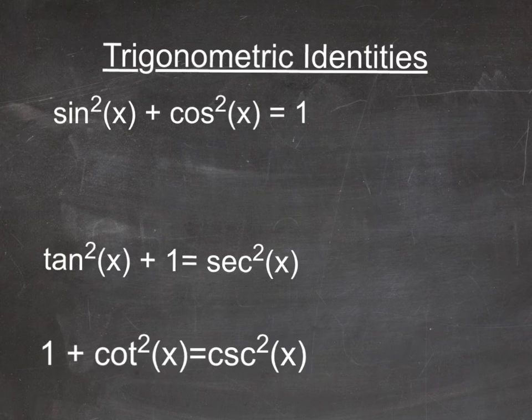So the first one, of course, is the equation of a unit circle, which is sin²(x) + cos²(x) = 1. So that's a good one to know.